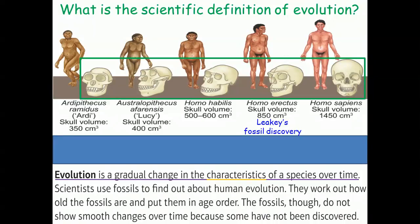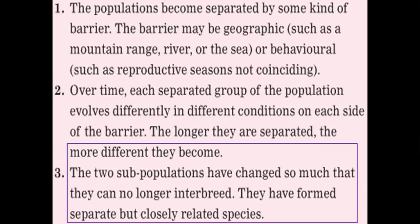Evolution is a gradual change in the characteristics of a species over time — it's not just one characteristic. Just having a longer neck in giraffes doesn't make you a new species; there have to be several characteristics that have changed through natural selection. Once those several characteristics have changed, the two populations are so different that they can't interbreed with each other and produce fertile offspring, and this is when they are a new species — but obviously they'll be very closely related species.